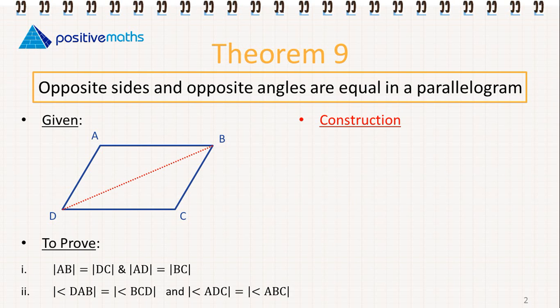Our construction: we draw a diagonal line from B to D, and we mark in our angles 1, 2, 3, and 4.